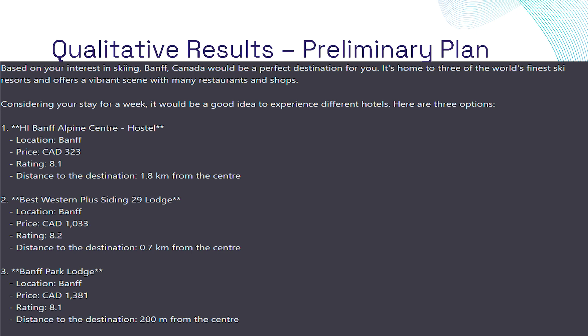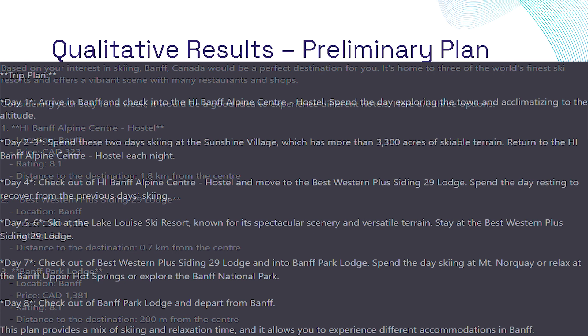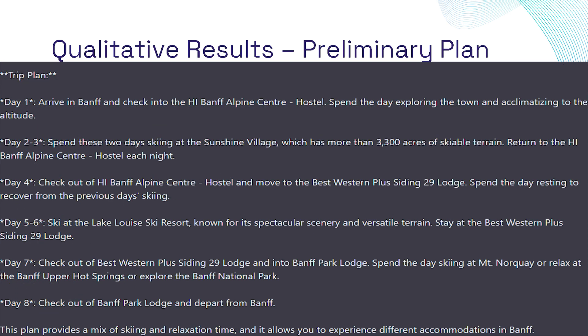Here's a sample example of our preliminary plan output using the ambiguous user input. As you can see, it correctly outputs three hotels based in Benz and also comes up with a plan of duration of seven days, stating each day what users should be doing during a regular ski trip.